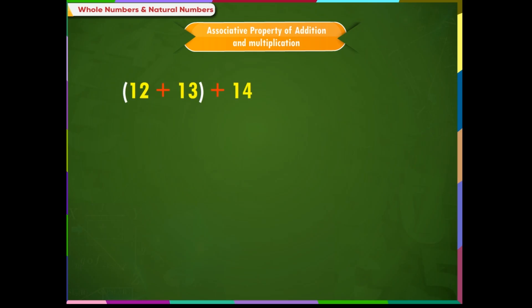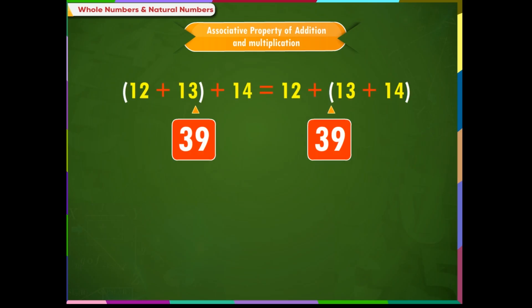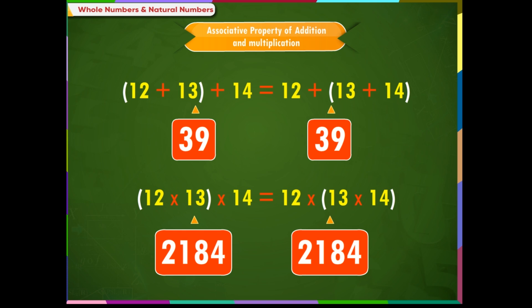Associative property of addition and multiplication: If three whole numbers are to be added, the sum will be the same even if the order of the numbers is changed. Similarly, if three whole numbers are to be multiplied, the product will be the same even if the order of numbers are changed. Thus, associative property of addition and multiplication holds true for whole numbers.